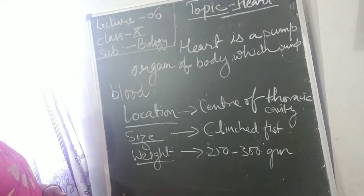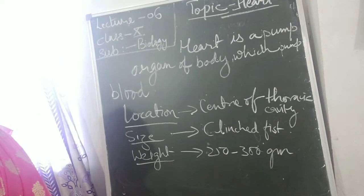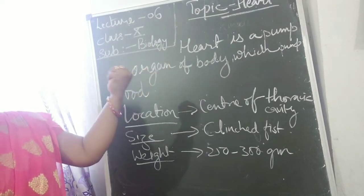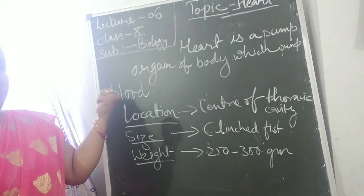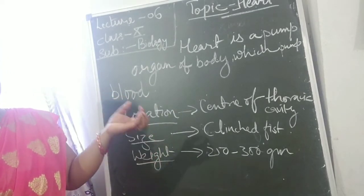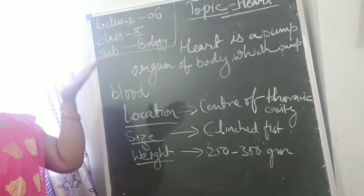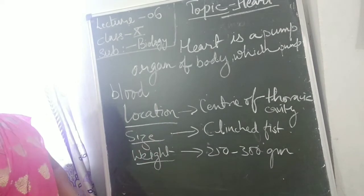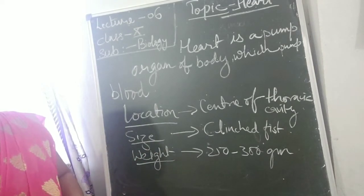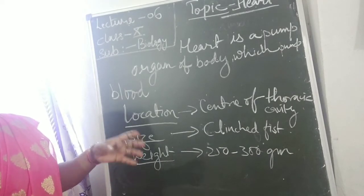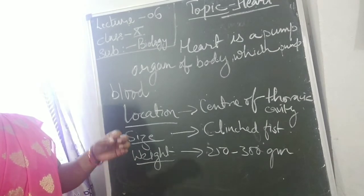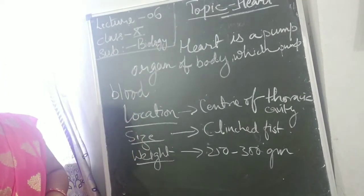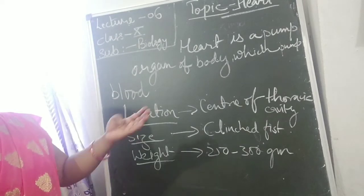The size of the heart is equivalent to a clenched fist. You take your left hand, put your thumb inside and cover it with your forefinger — that is the size of your heart. As a baby grows, the heart size also grows. In adults the size is bigger than in children, and the heart of a male is slightly bigger than that of a female due to the masculine structure.